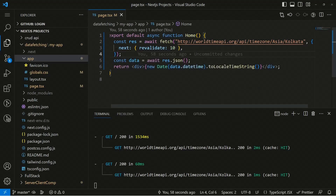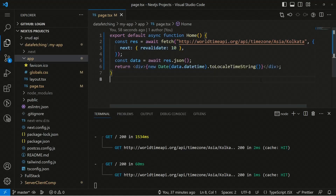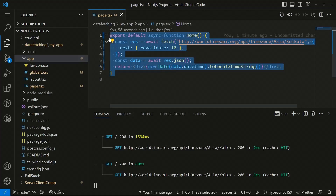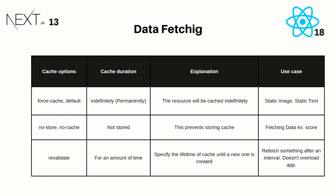Let's move to the slides to discuss this in more detail. Here are the cache options available in Next.js version 13. First, we have 'force-cache' and 'default', which are almost similar. Both cache data indefinitely — permanently on your server. This resource will be cached indefinitely, so you won't see new data.